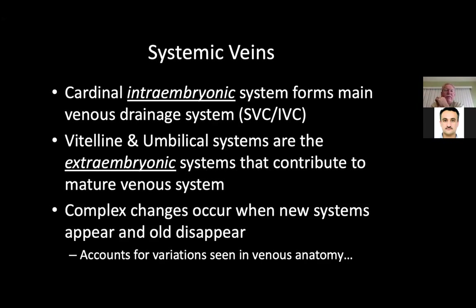The cardinal intraembryonic system forms the main venous drainage systems — the SVC and the IVC. The vitelline and umbilical systems are the extraembryonic systems that contribute to the mature venous system. There are complex changes that occur when new systems appear and old ones disappear, and this is why we see so many different types of venous anatomy.